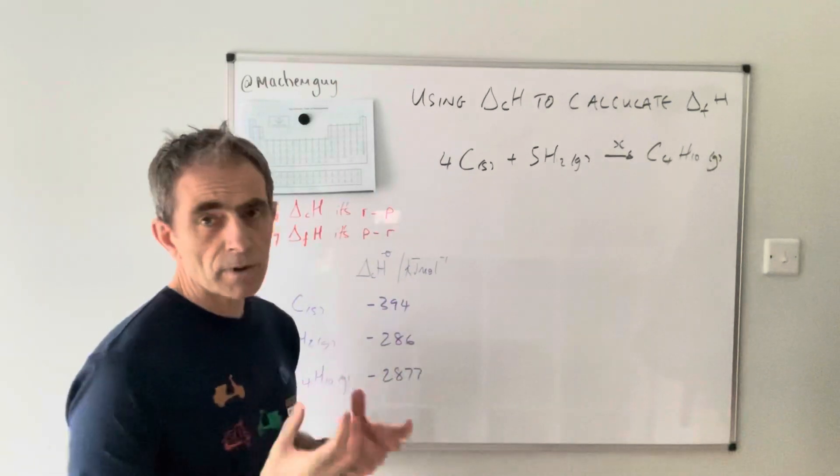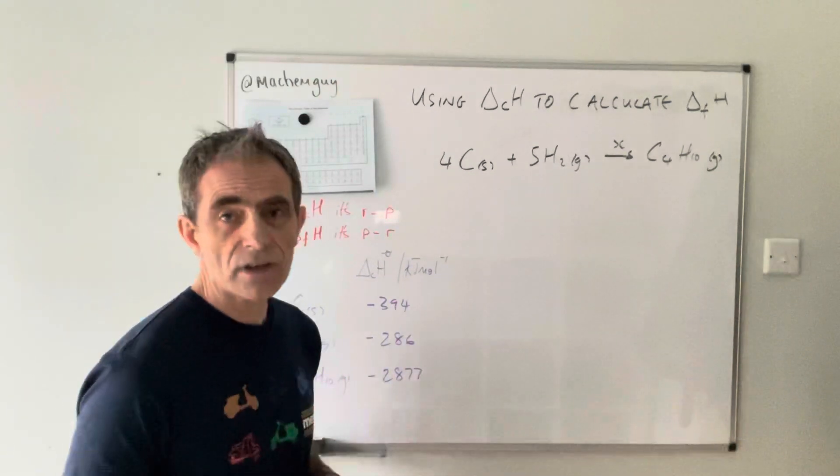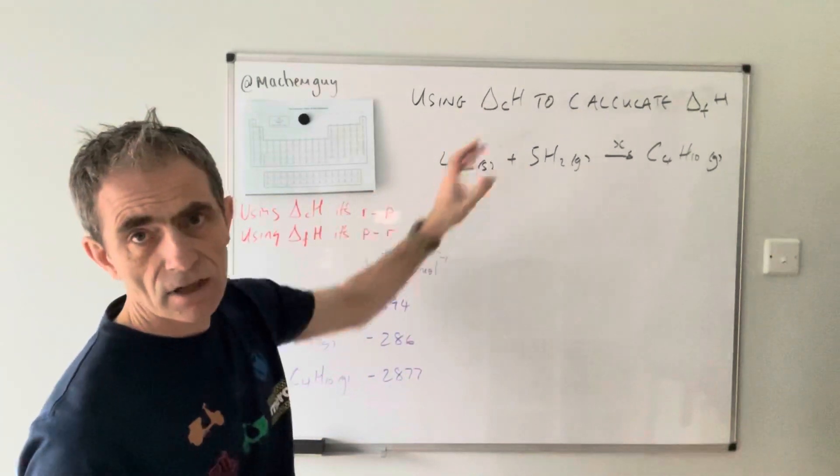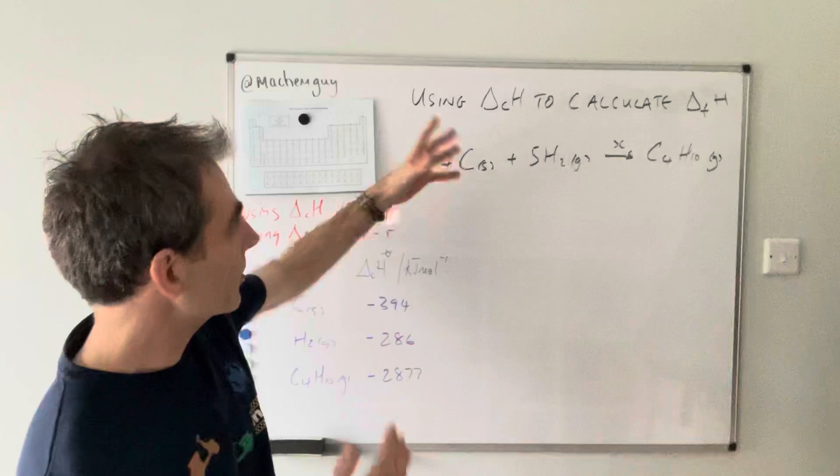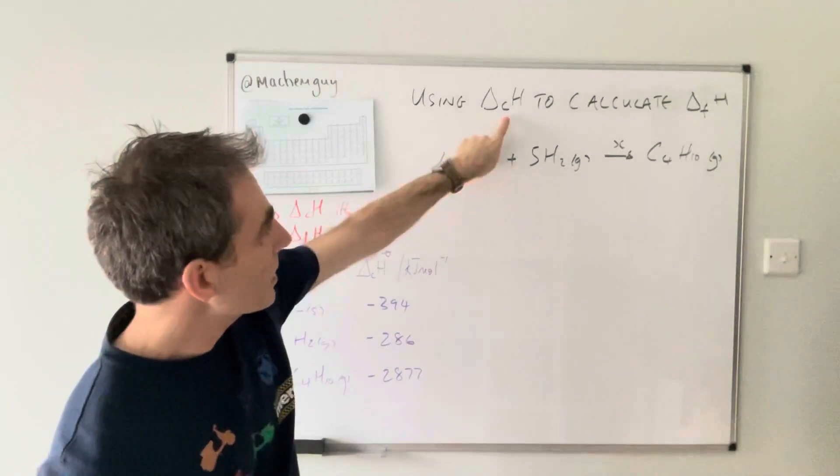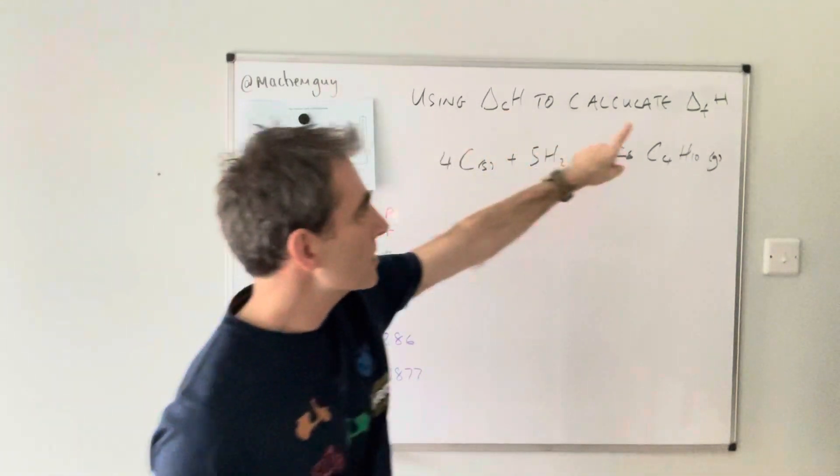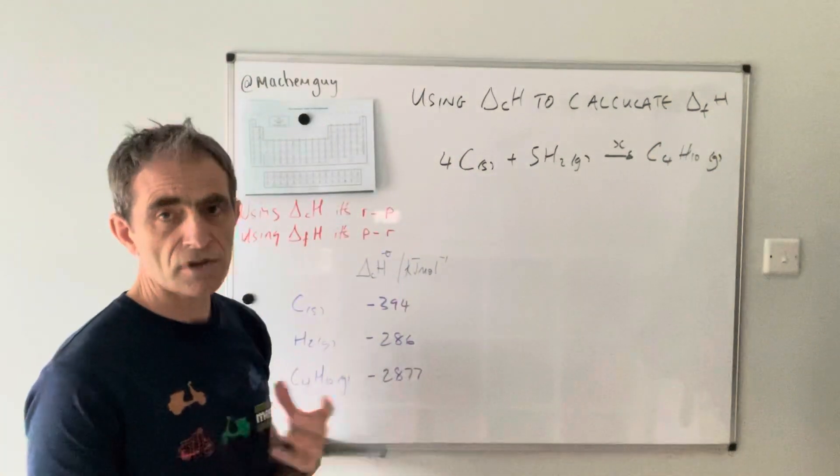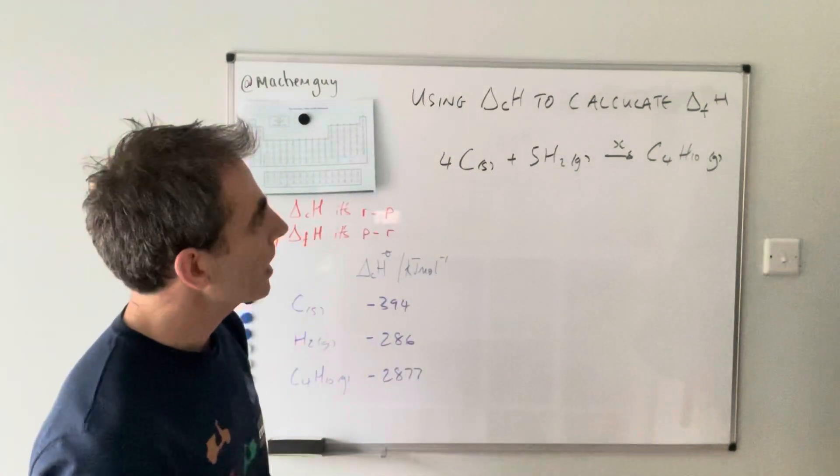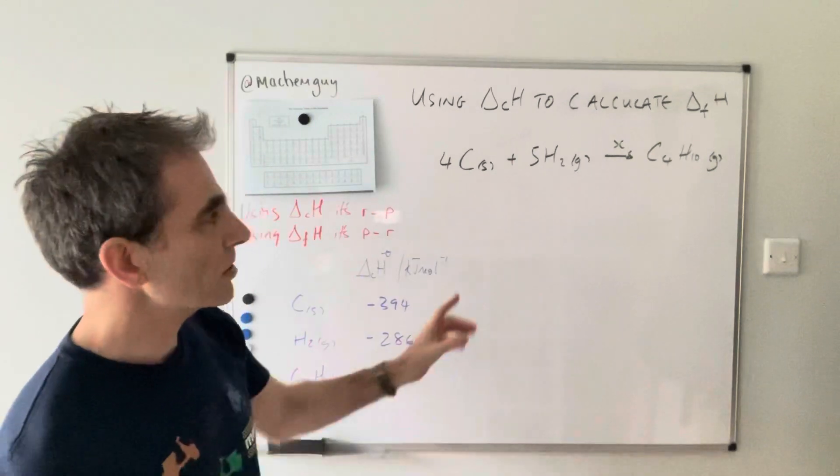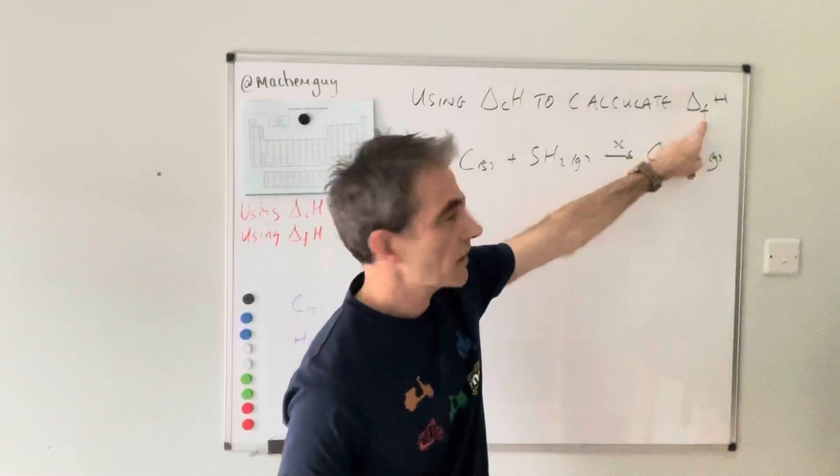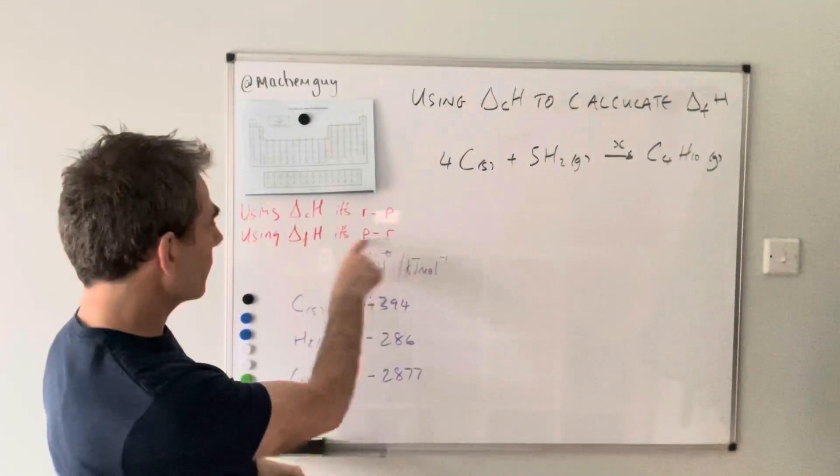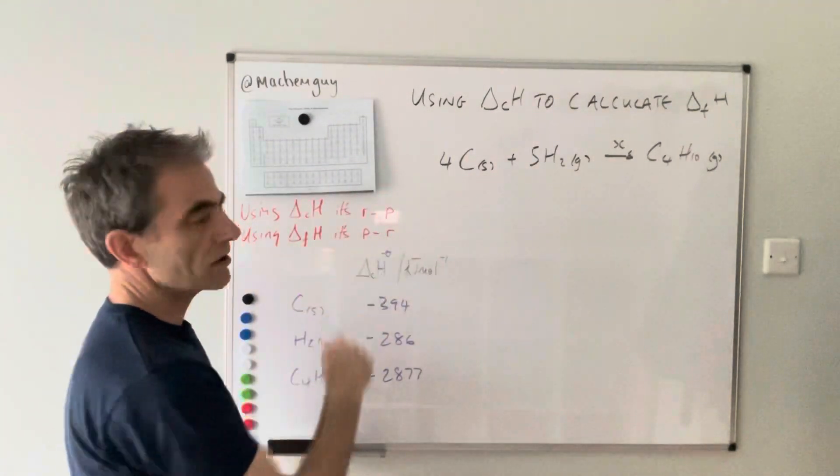The problem I see as a teacher is when you've got a question like this, students start getting confused because the question says 'use enthalpy changes of combustion to calculate an enthalpy change of formation.' So you've actually got both terms in the question. What happens is a lot of students just fixate on the word formation and use the formation formula, products minus reactants.